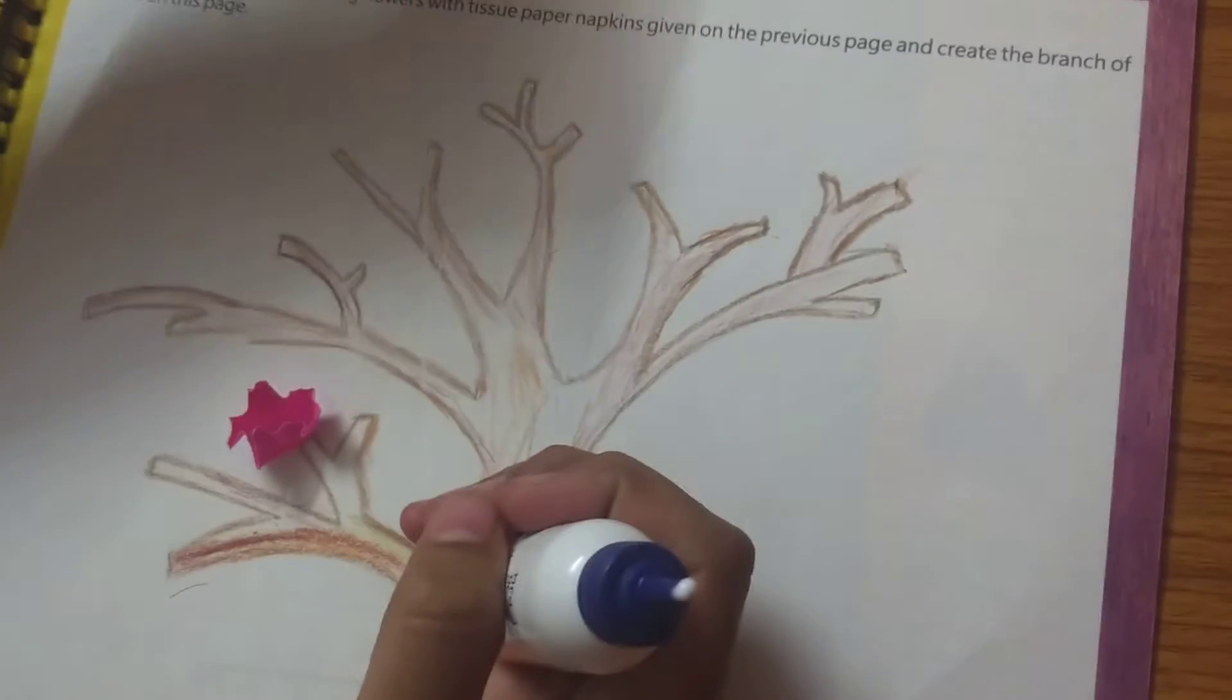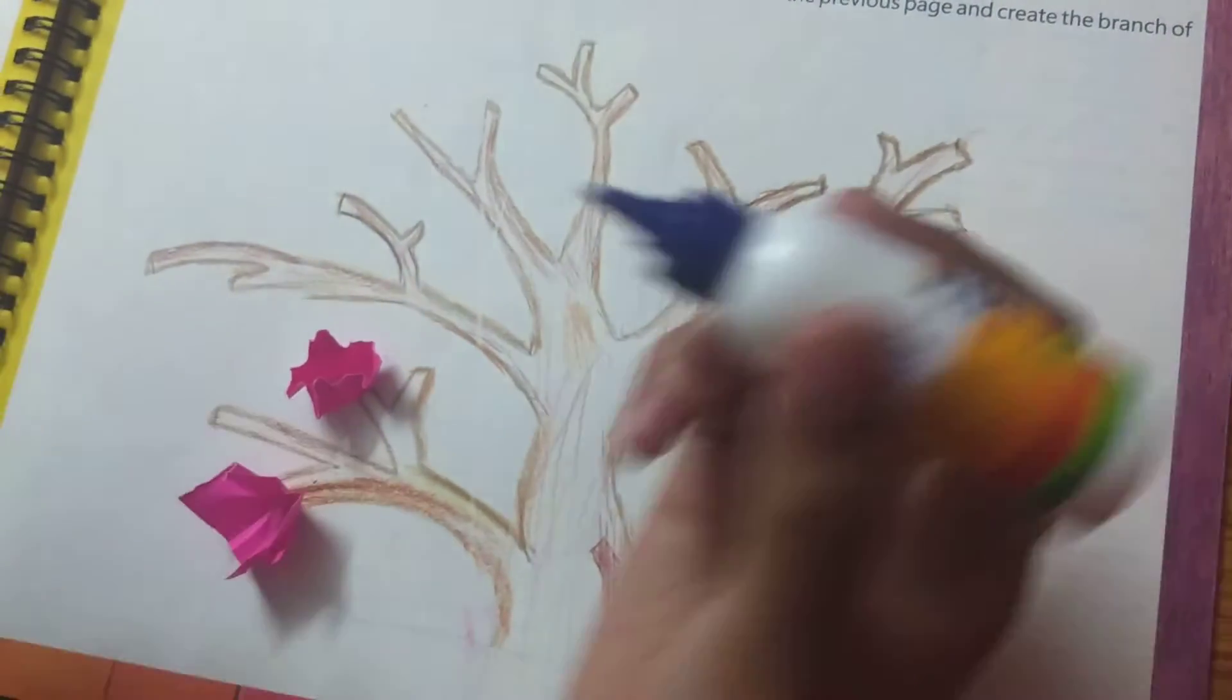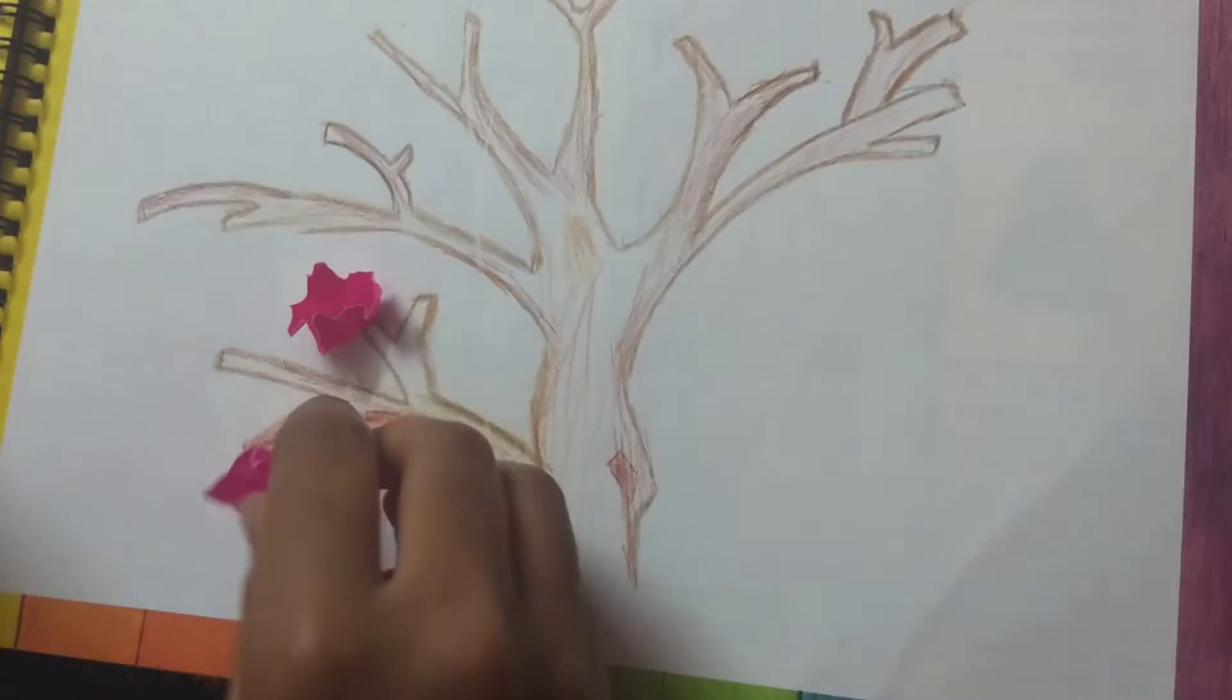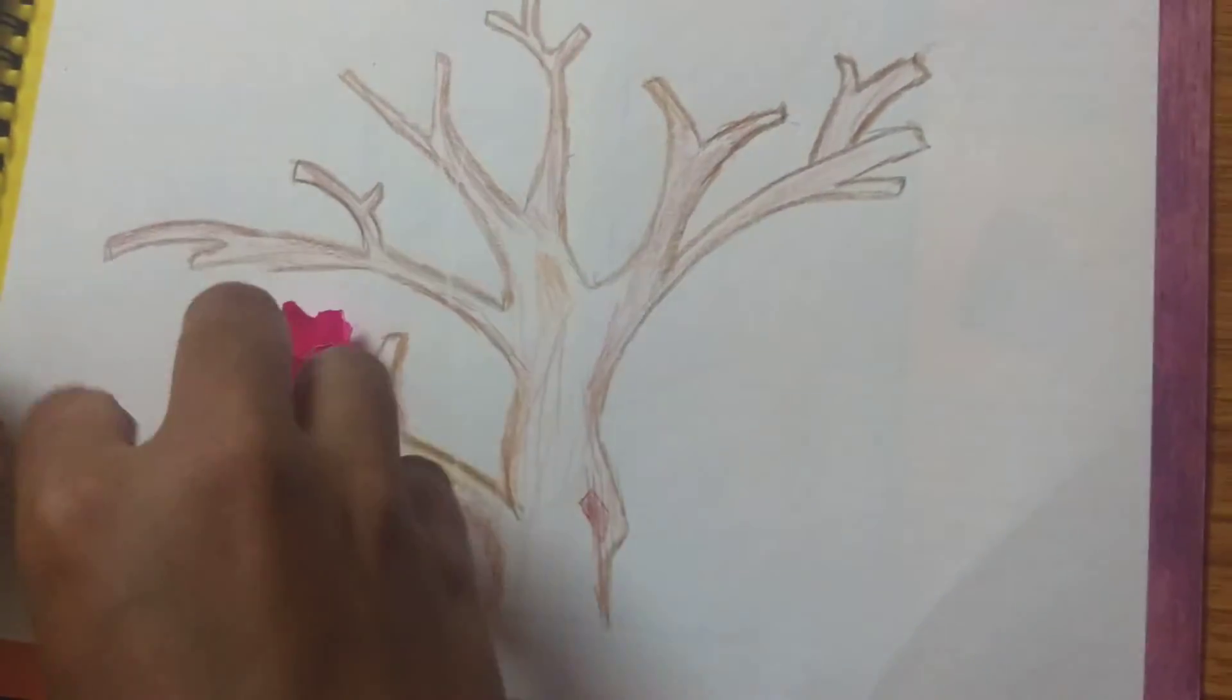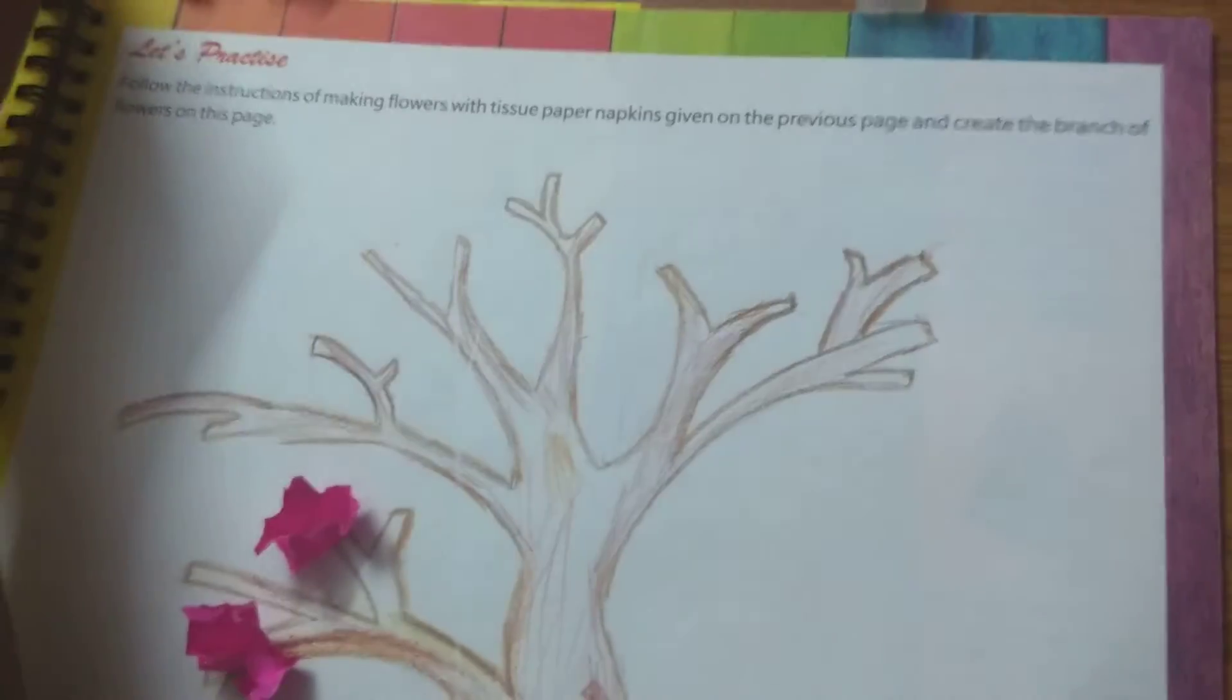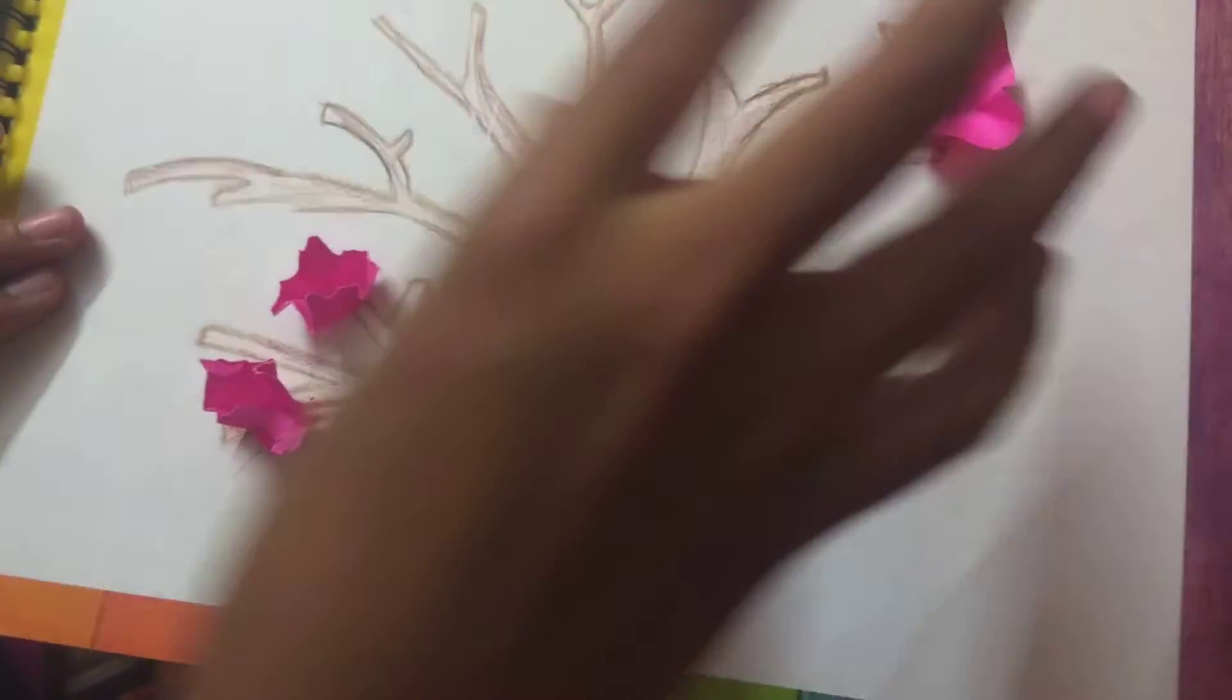And again anywhere you want you can put the flowers in the branches. Then again the glue is leaking, yes. At the last we will press.